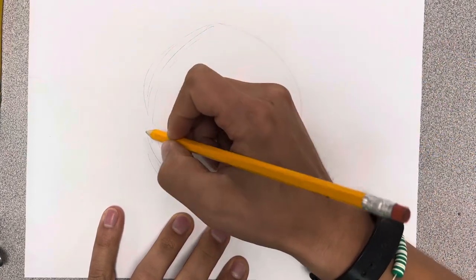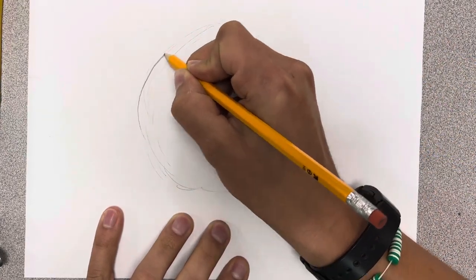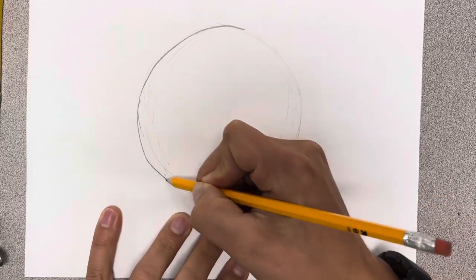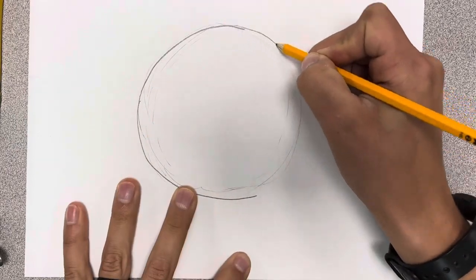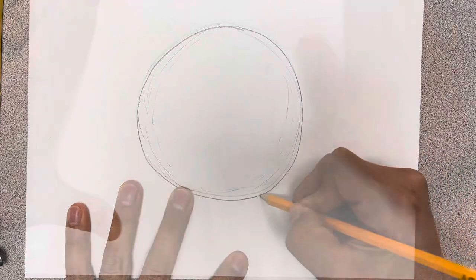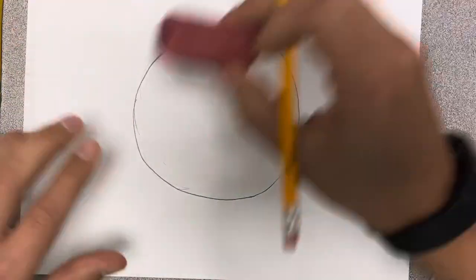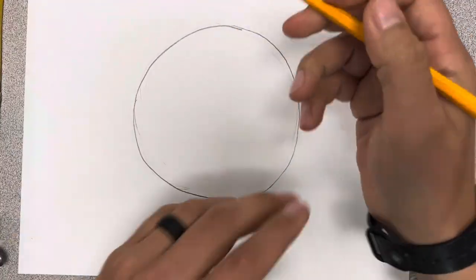Over here. And then once I got a good idea, I can kind of trace around it. Erase some of those extra lines so it doesn't get in our way.